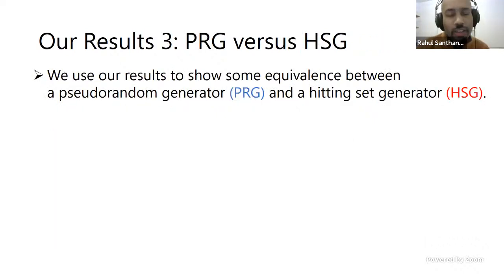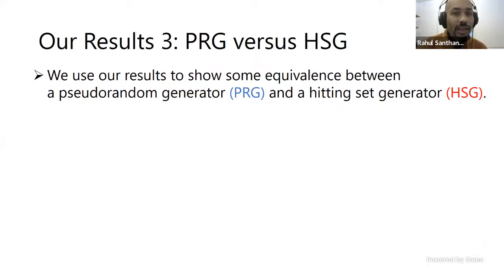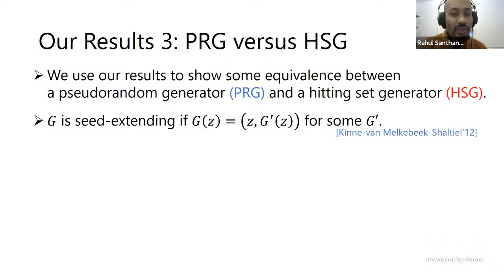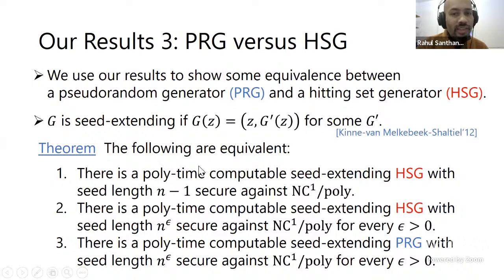The final result is about hitting set generators (HSGs) versus PRGs. In the complexity-theoretic derandomization setting, hitting set generators are equivalent to PRGs. But in the cryptographic setting where the adversary can be more powerful than the generator, this is unknown. We use our results to show new equivalences between the two notions for seed-extending generators where the first part of the output is just the seed. Such generators cannot be secure in the cryptographic setting but are interesting where adversaries are weaker than the generator.